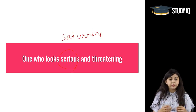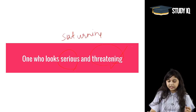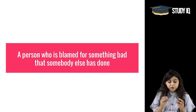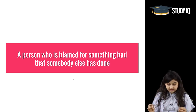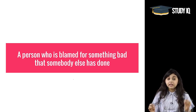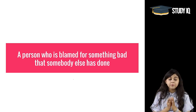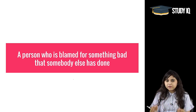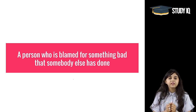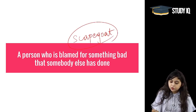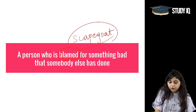A person who is blamed for something bad that somebody else has done — someone on whom a whole problem and its responsibility has been placed — we use the word 'scapegoat' for such a person. We say that the person has become a scapegoat, meaning all the blame has been put on that person.